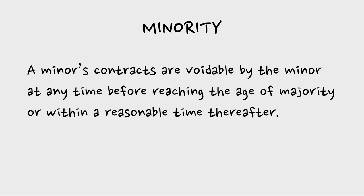Starting with minority: the general rule from contracts is that a contract made by a minor is voidable at the option of the minor anytime before reaching the age of majority and for a reasonable time after. There are nuances and exceptions — necessities, misrepresentation of age, tortious conduct — but the general rule from contracts applies. Minority is one of the real defenses that can be asserted if the person made the contract or negotiated the instrument when they were a minor.